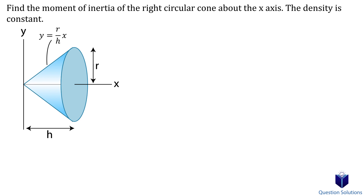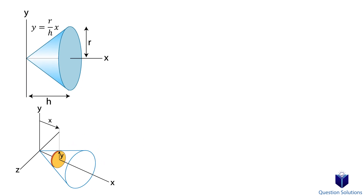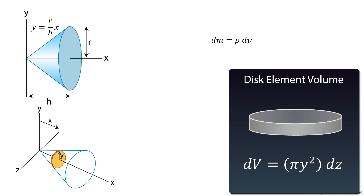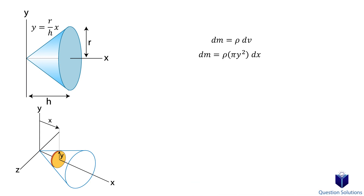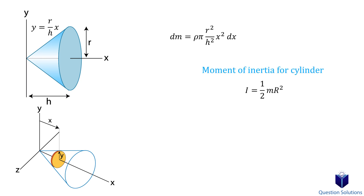Let's look at this problem where we have a cone and we need to find the mass moment of inertia about the x-axis. For this problem we will use the disk method. Let's draw a different perspective so we can see the shape and the disk better. So as before, we follow our set of steps. First, we write down our mass element for our disk — that's rho dv. Next, we replace the volume element with the volume of a disk, since we know the volume of a disk. We can replace y with the equation given to us.